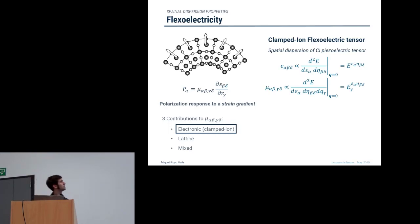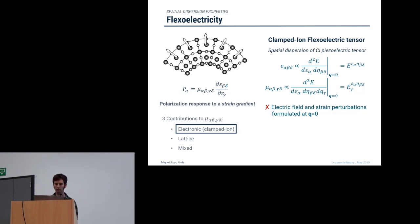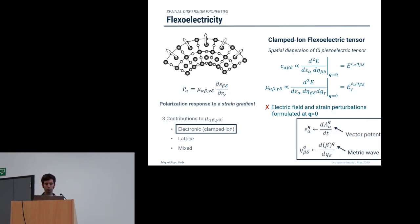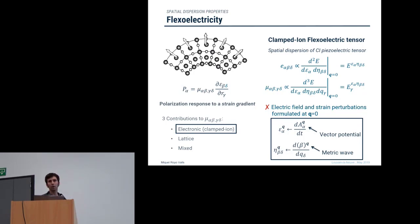To approach the calculation of this magnitude, one can think of it as the spatial dispersion of the piezoelectric tensor and try to compute it by taking the q-derivative of the dFPT expressions for the piezoelectric tensor. However, as Max has already mentioned, there is a problem: the electric field and strain perturbations are only formulated at the zone center. To solve this, we have redefined these perturbations: for the electric field, we take the time derivative of a vector potential perturbation, and for the strain perturbation at finite q, we consider the first gradient of a metric wave perturbation.